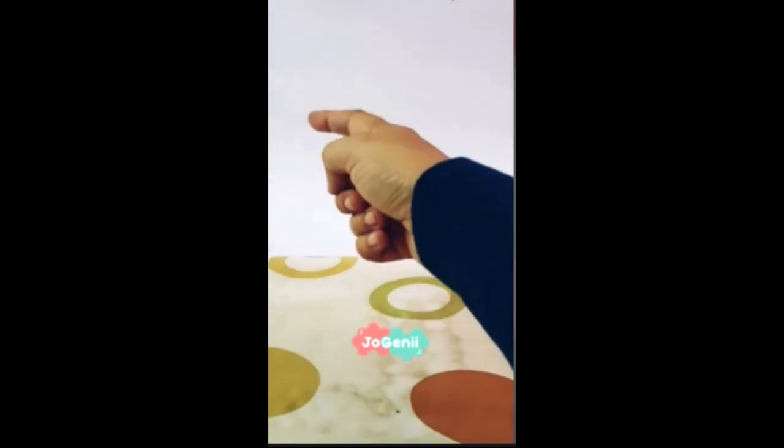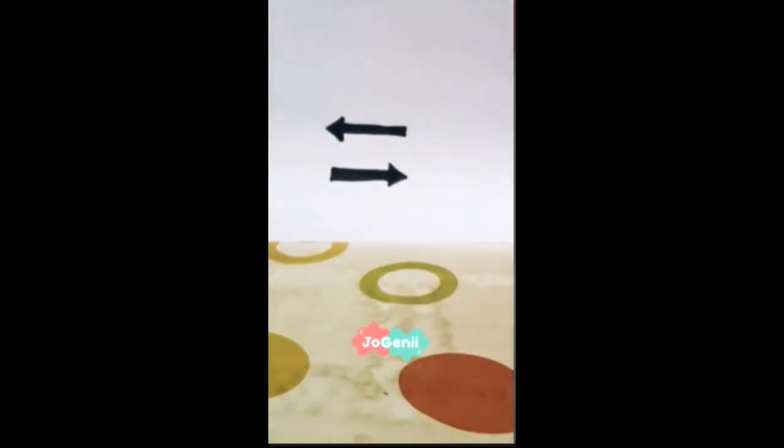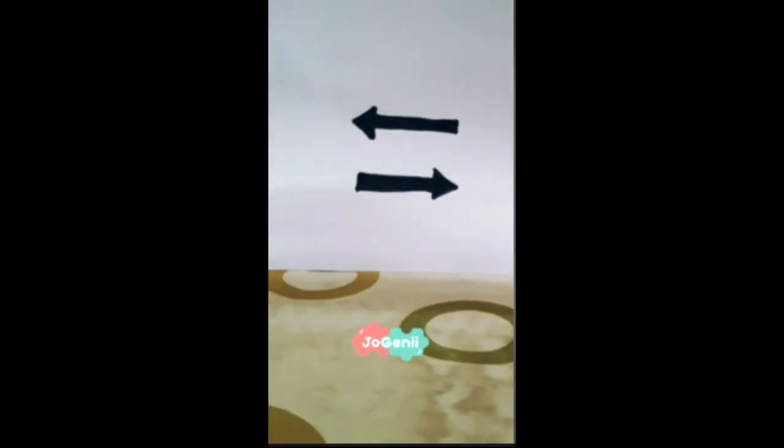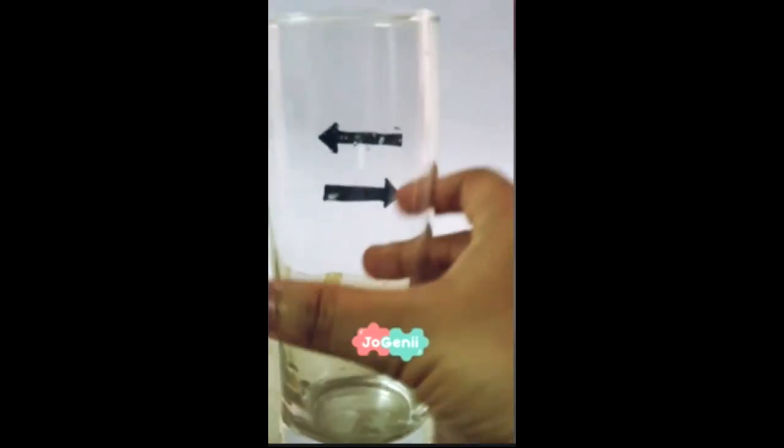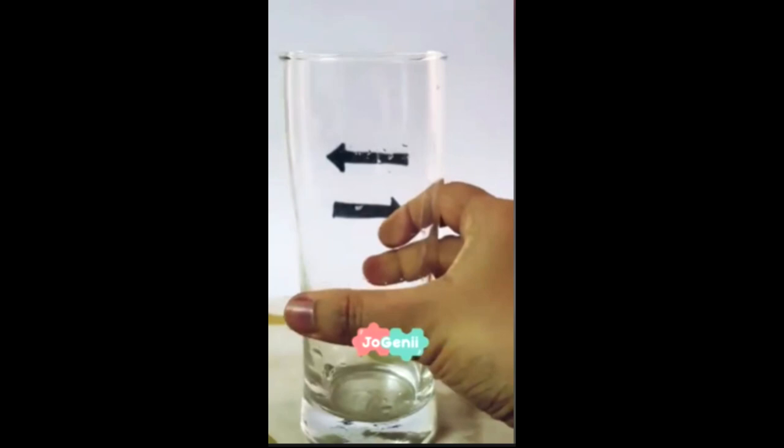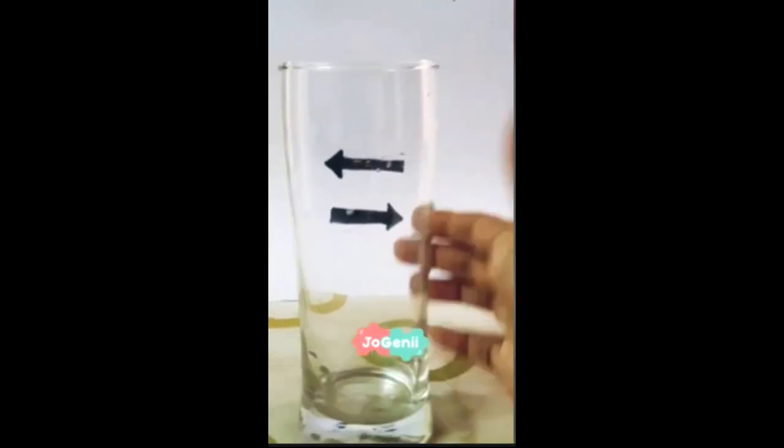Here, as you can see on a piece of paper, I have made two black arrows: the top one facing left, the bottom one facing right. Now we bring an empty glass of water here and place it at a certain distance from the paper.